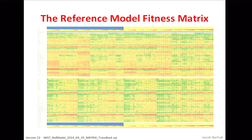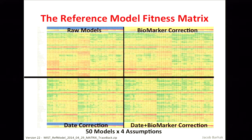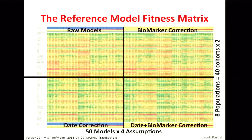I'm going to jump ahead and remind you what I started talking about — the reference model for disease progression. The generation of population was such that we will have information to run models upon. This is how the fitness matrix, the output of the reference model, looks like. The columns each represent a different model. The rows are different populations. The colors are based on the fitness, and each cell has a fitness score — this means how well the model fits the population results from that clinical trial.